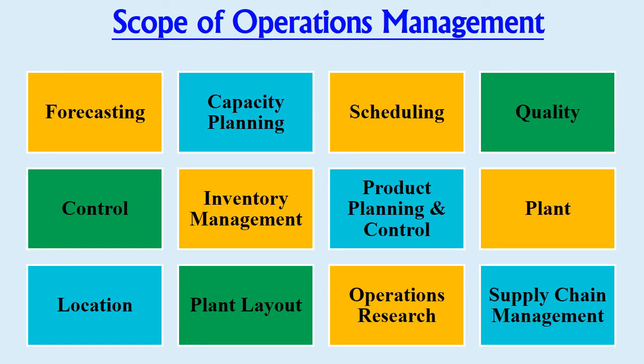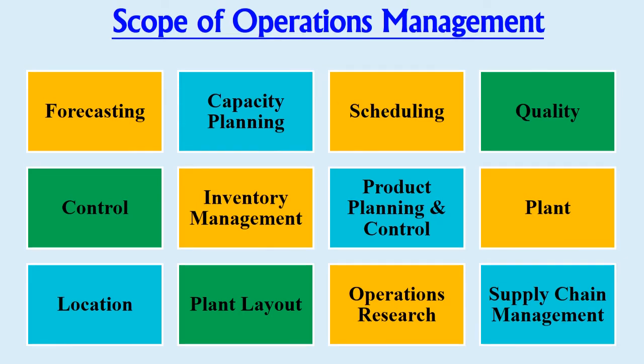The last scope area is supply chain management, which is the management of all aspects of providing goods to the consumer — starting from raw material through production and distribution to the final consumer.